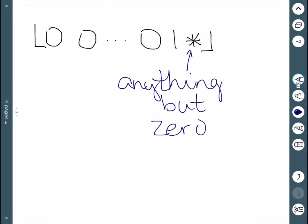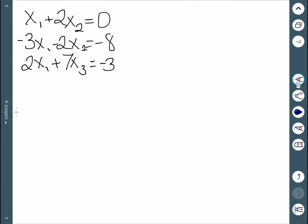So let's look at one more example. This is a system of three equations and two unknowns. So the first step is to put it in augmented matrix form.